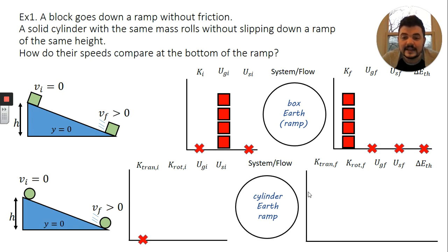So let's go through this. Initially, there's no kinetic energy, translational or rotational. It is at a height H above the ramp, so there's gravitational potential energy. And in fact, we should use the same four blocks because both of these objects have the same mass and they're at the same height. And then there is no spring.